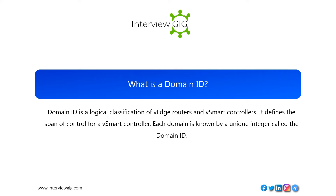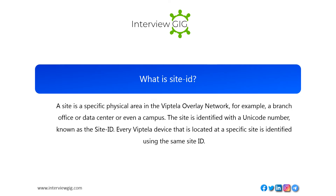What is a Domain ID? Domain ID is a logical classification of V-Edge routers and V-Smart controllers. It defines the span of control for a V-Smart controller. Each domain is known by a unique integer called the Domain ID. What is a Site ID? A site is a specific physical area in the Viptela overlay network — for example, a branch office, data center, or even a campus. The site is identified with a unique number known as the Site ID. Every Viptela device located at a specific site is identified using the same Site ID.